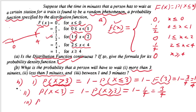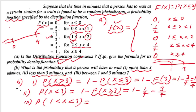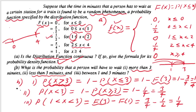For part e, find the probability that the person waits between 1 and 3 minutes: P(1 < X < 3) = F(3) − F(1). F(3) = 3/4 (from the interval 2 to 4 formula). F(1) = 1/2 (from the interval 0 to 1 formula, giving 1/2). Therefore P(1 < X < 3) = 3/4 − 1/2 = 1/4.